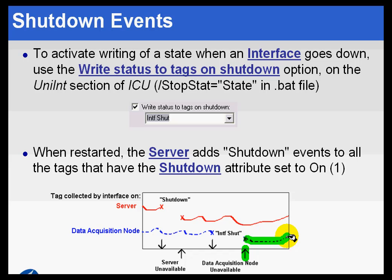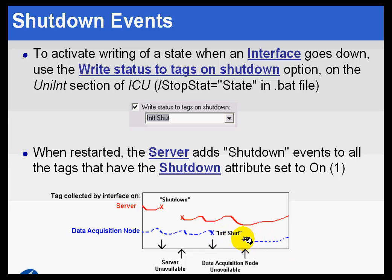So if we didn't have INF SHUT written, what you would see instead is just connecting the dots between these two values — actually that would be a straight line between these two values. And we don't want that. Instead, we want some indication that there's been a problem, and that's why we suggest you use this INF SHUT.